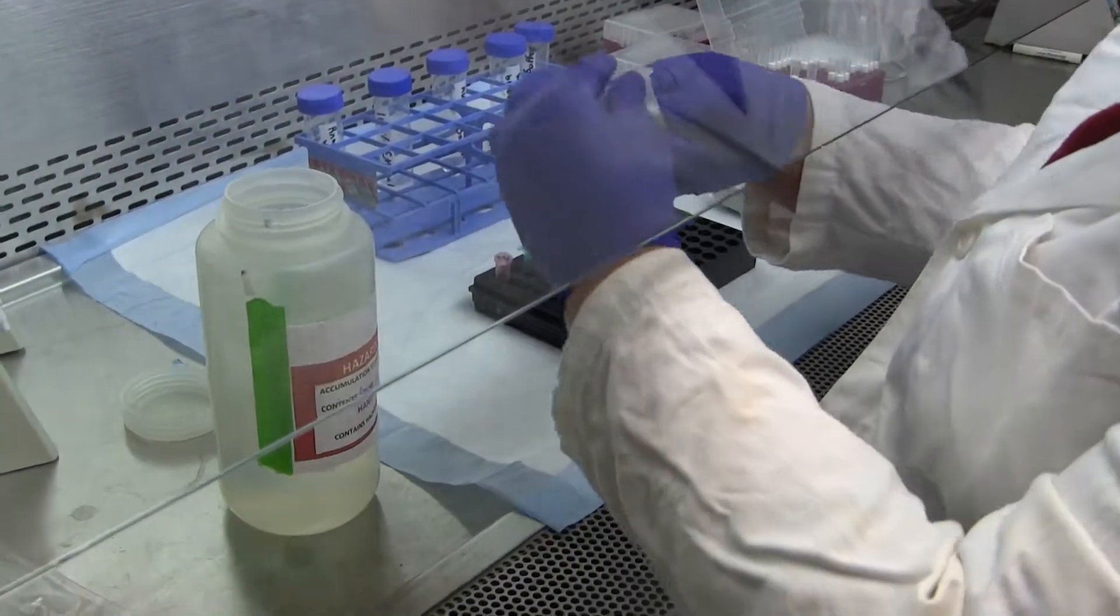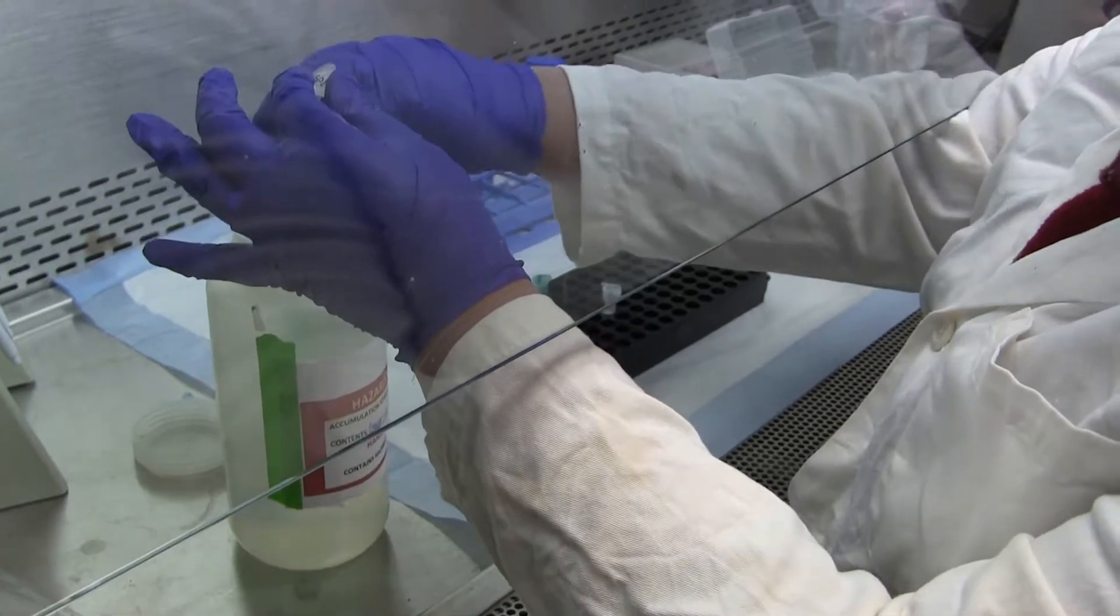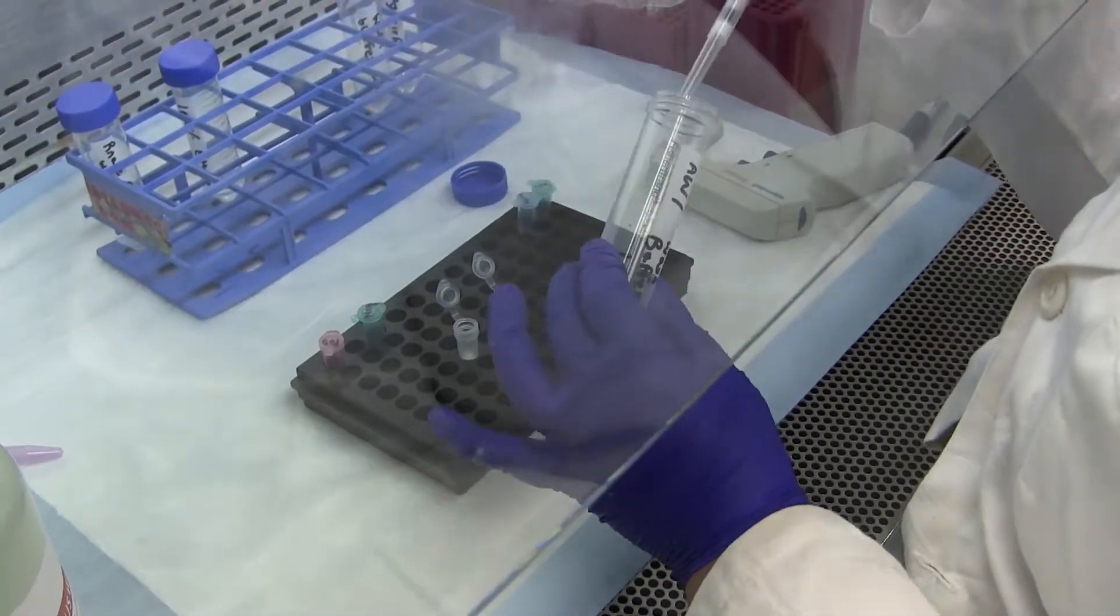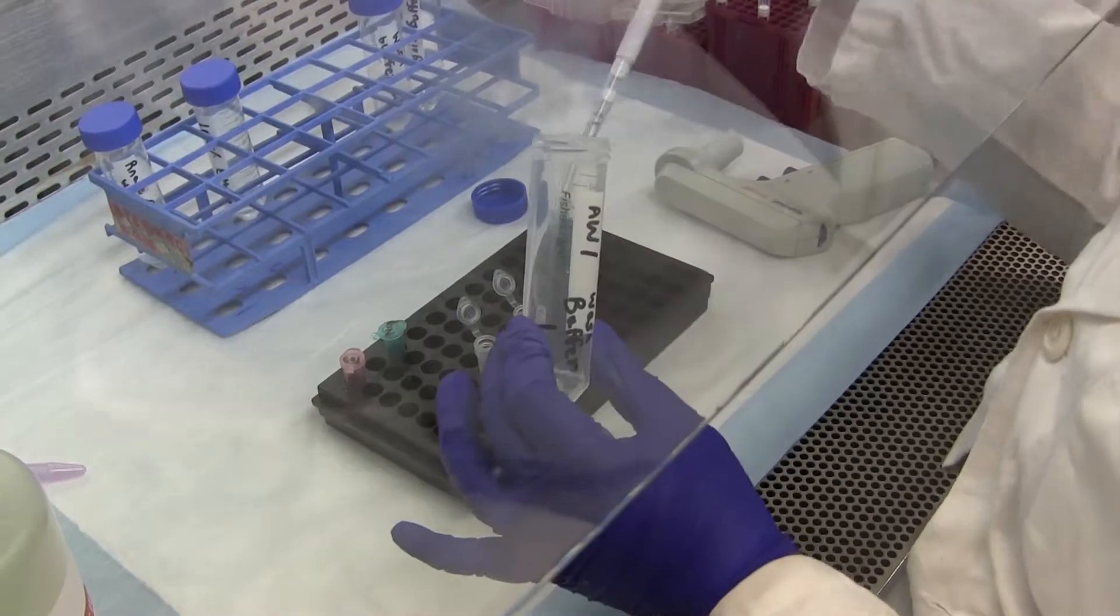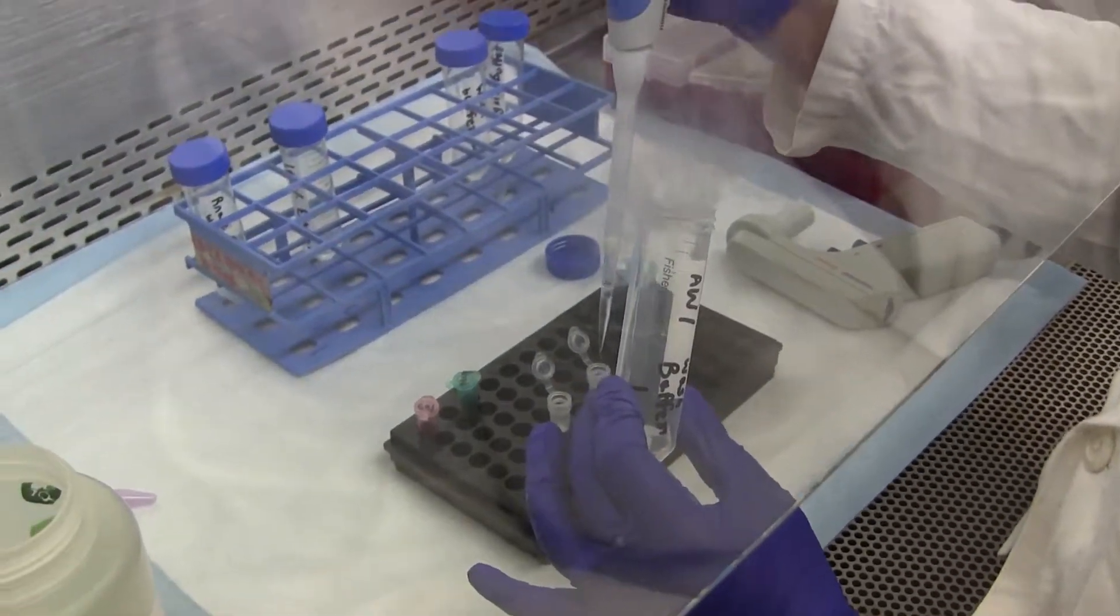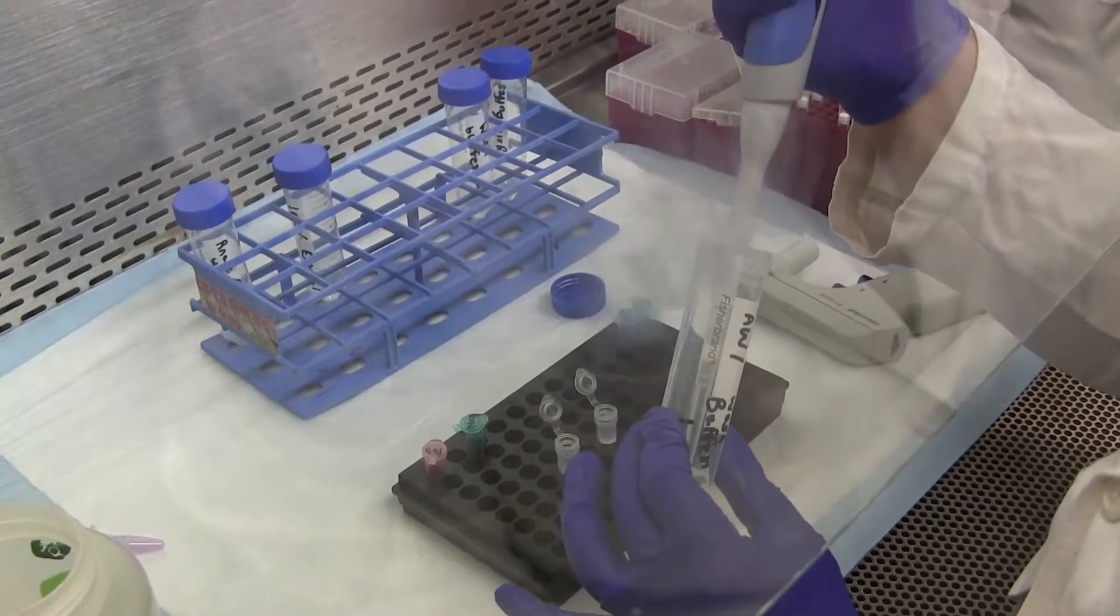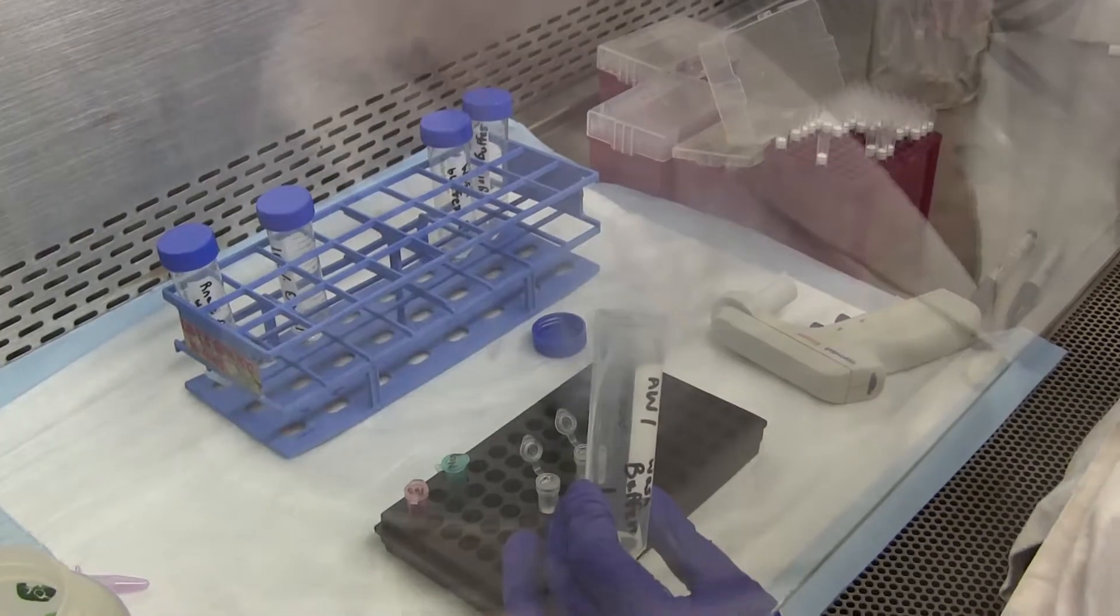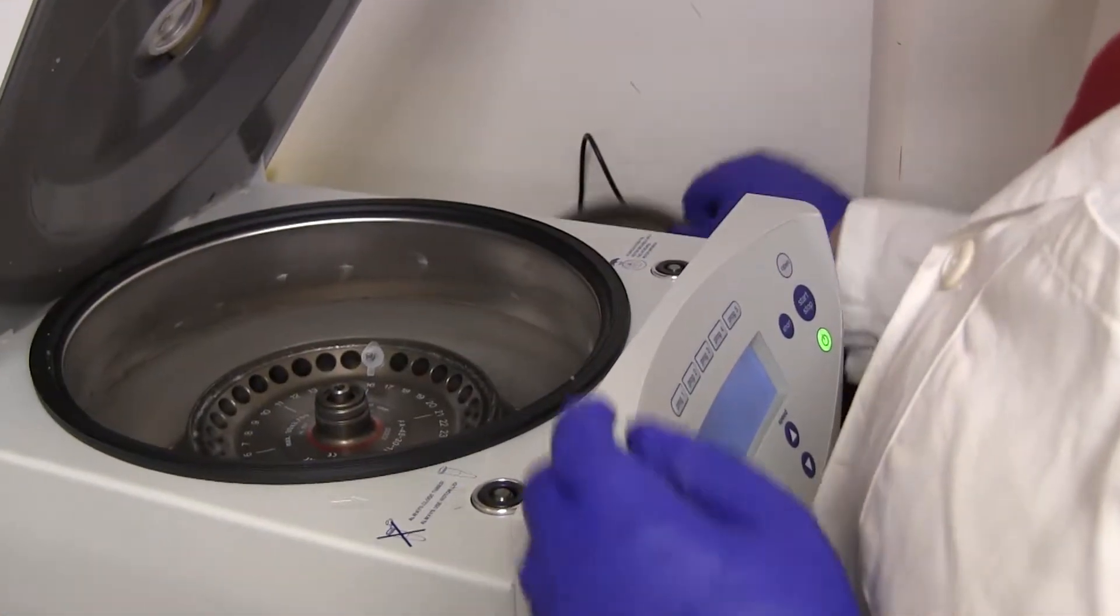So then after dumping the flow through, you're going to add 800 microliters of the wash buffer. And then if you hold it above the container, then you don't have to change pipette tips. But if it happens to touch that rim, then you have to change it. So next step is to centrifuge.